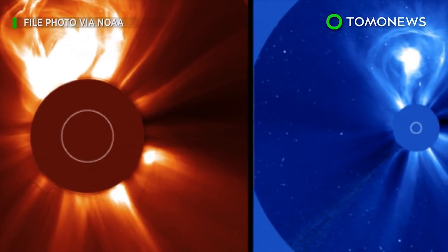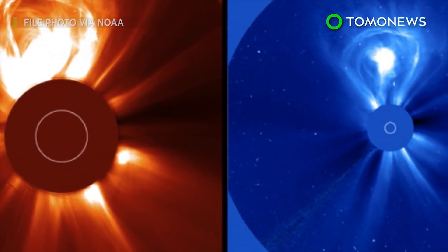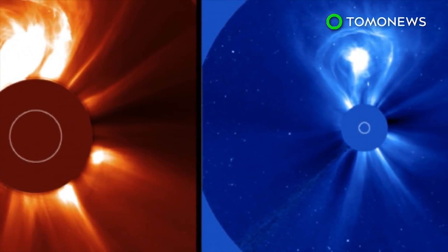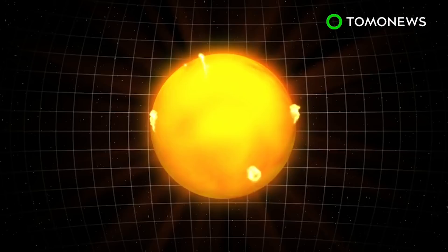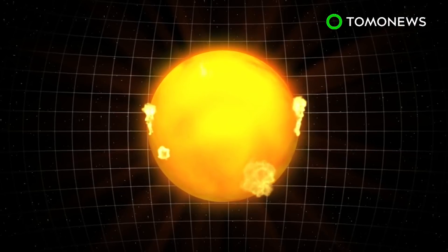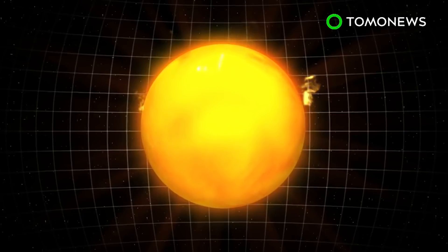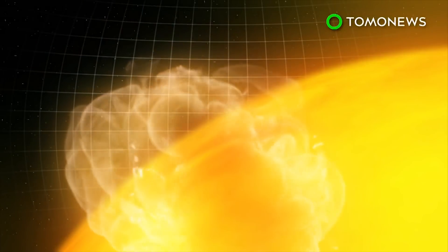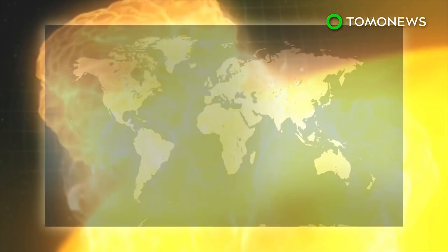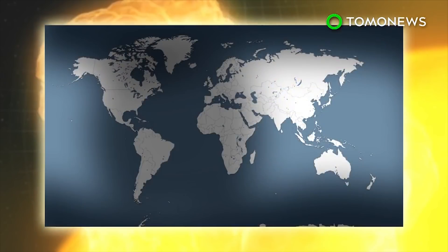The glowing yellow orb of life floating millions of miles away at the center of our solar system flared up in a massive way this week. A massive storm over the sun on Wednesday discharged the strongest solar flare in 10 years. The National Oceanic and Atmospheric Administration says the X9.3 flare caused high-frequency radio blackouts and navigational issues over the sunlit part of Earth.